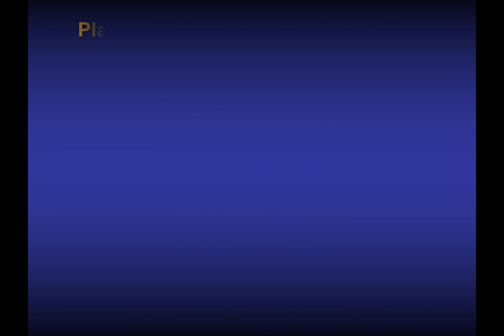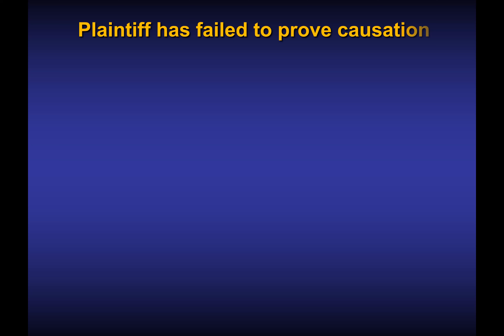Starting with bullet points: let's say you're the defense in a civil case and you want to argue to the jury that the plaintiff has failed to prove something — in this particular example, that they failed to prove causation. So you start with your bullet points. Again, this is a single text box with a series of bullet points, but I've set it up so that only one bullet point comes up at a time. And not only one bullet point comes up at a time, but I can also weave my digital media into this argument in between bullet points.